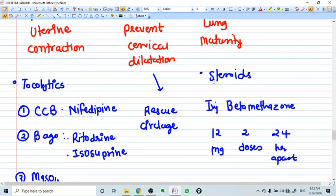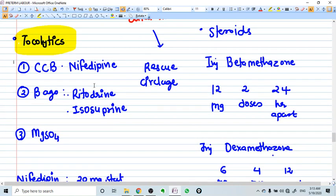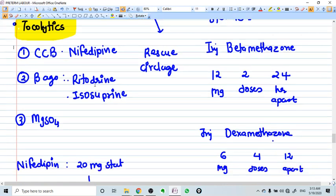To prevent uterine contraction, we use tocolytics. Tocolytics are drugs which relax the uterine smooth muscle and prevent uterine contractions. They are nifedipine, ritodrine, isoxsuprine, magnesium sulfate, all these things. Everything mentioned here is a tocolytic drug.